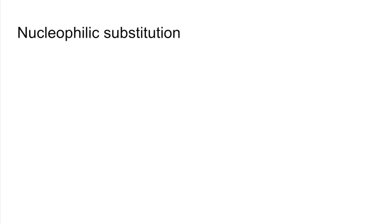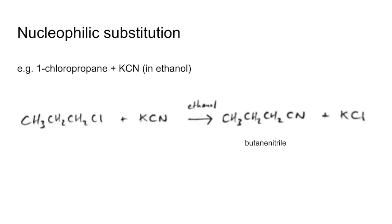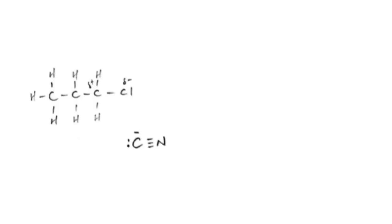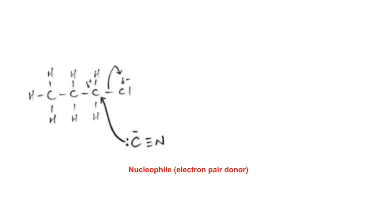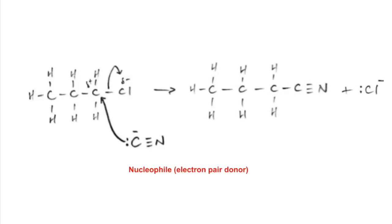The final mechanism is nucleophilic substitution, using 1-chloropropane with KCN in ethanol. It's a straightforward substitution where chlorine is replaced by the CN group, giving butanenitrile. Again, the carbon chain is extended by one carbon — from three to four. In the mechanism, the CN⁻ ion acts as a nucleophile, donating a pair of electrons to the slightly positive carbon in the C-Cl bond, which repels the electrons in the C-Cl bond onto the chlorine, giving a straightforward substitution product.